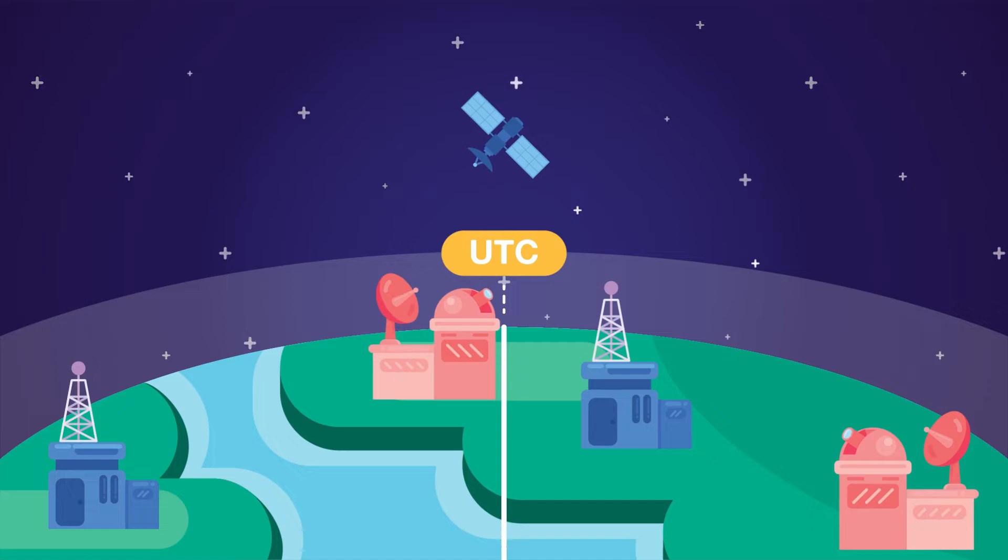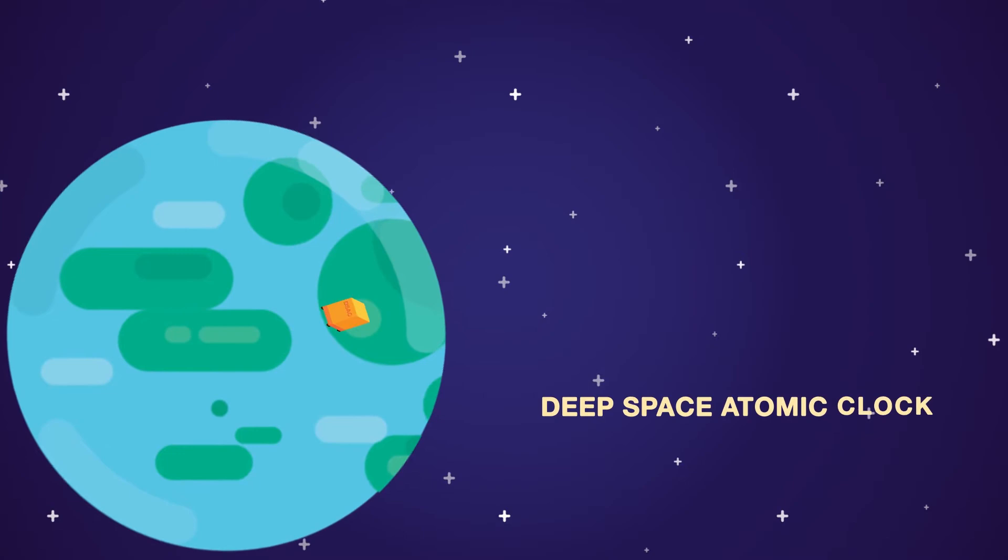What's even more interesting is that the ultra-precise mercury ion atomic clock, known as deep space atomic clock (DSAC), is now operational and ready to improve the accuracy of satellite signaling.